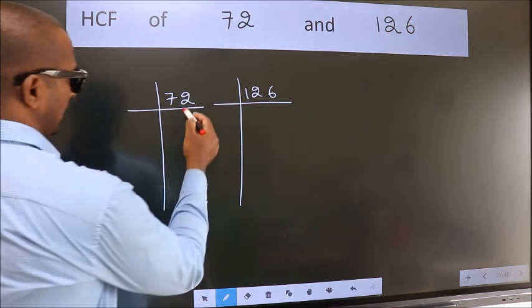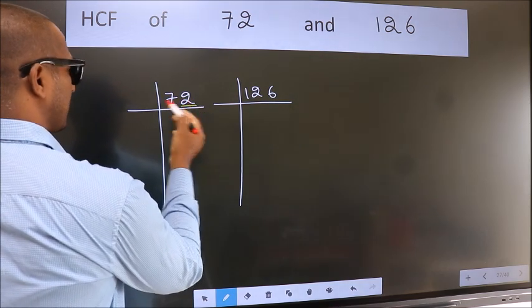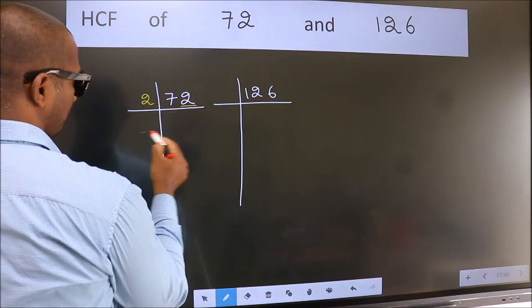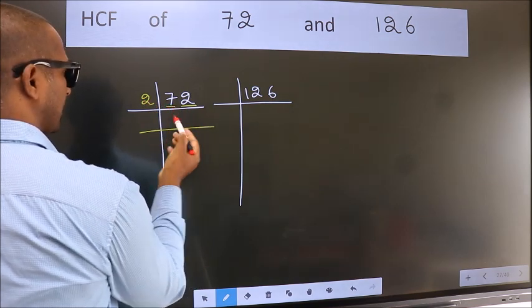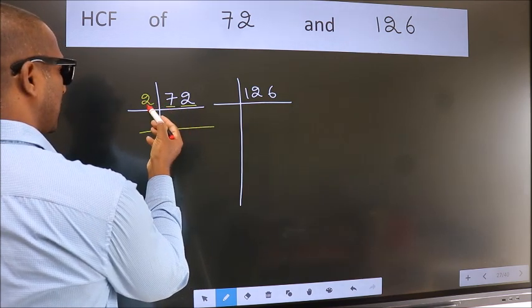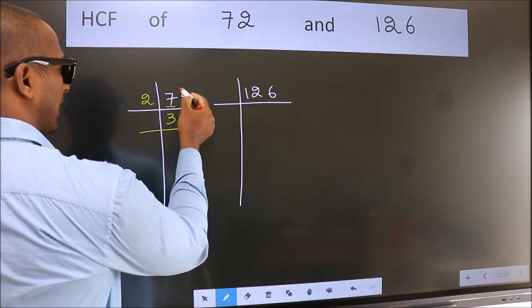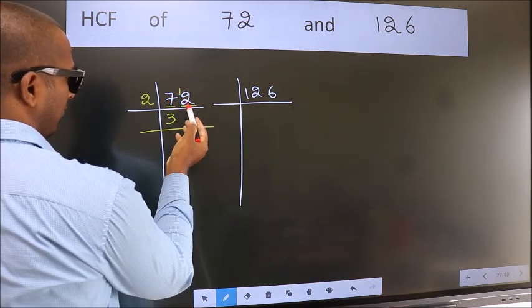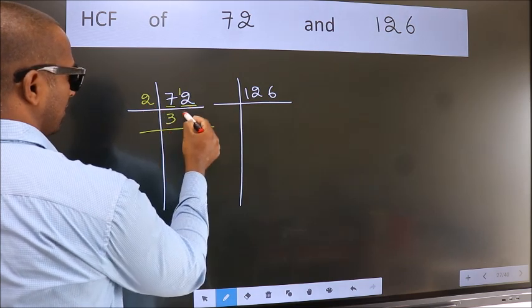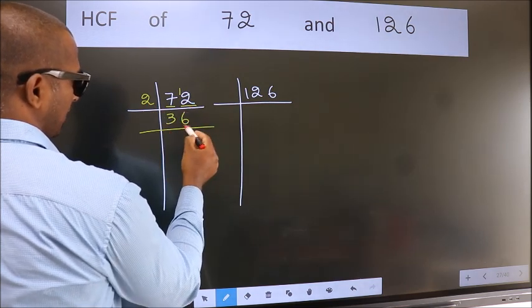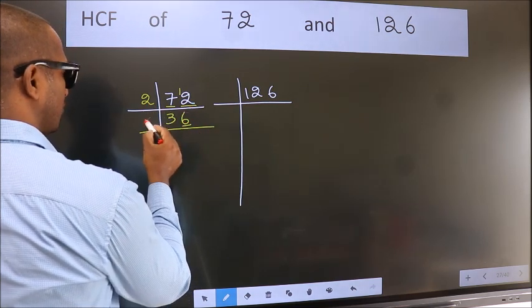Next. Last digit 2, even, so take 2. First number 7. A number close to 7 in 2 table is 2×3=6. 7-6, 1, 1 carried forward 12. When do we get 12 in 2 table? 2×6=12. Last digit 6, even, so take 2.